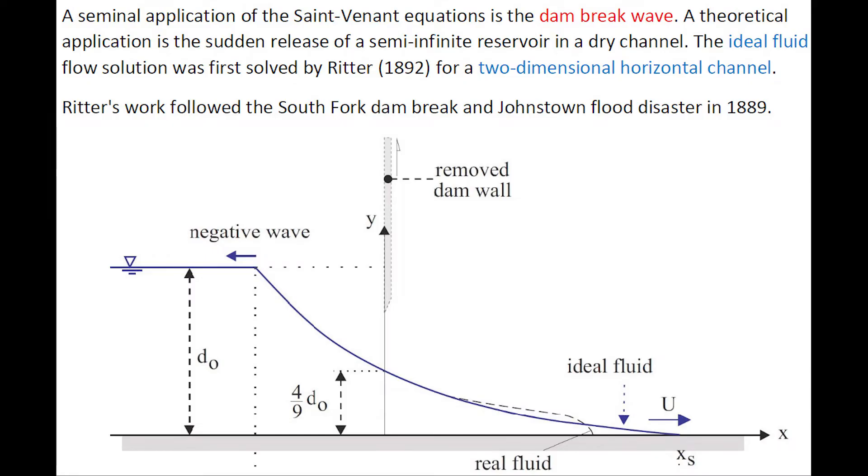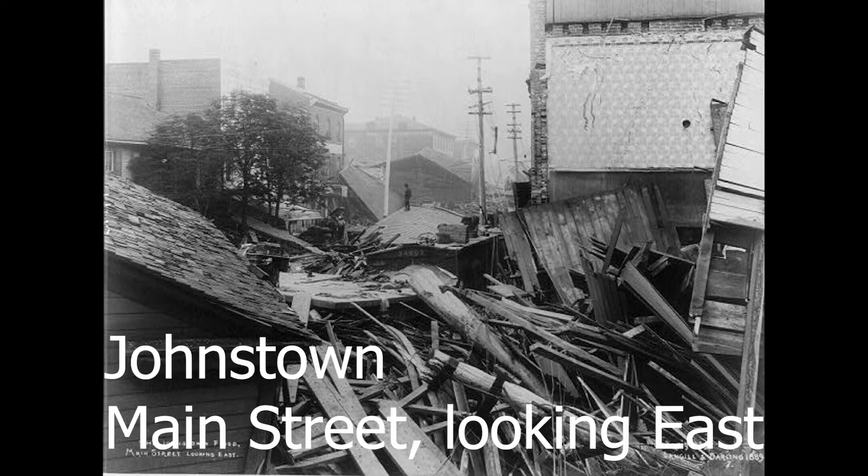A seminal application is a dam break wave. A theoretical application is a sudden release of a semi-infinite reservoir in a dry channel. The ideal fluid flow solution was first resolved in 1892 by Ritter for a two-dimensional horizontal channel. Ritter's work followed the South Fork Dam break and the Johnstown Flood disaster in 1889.